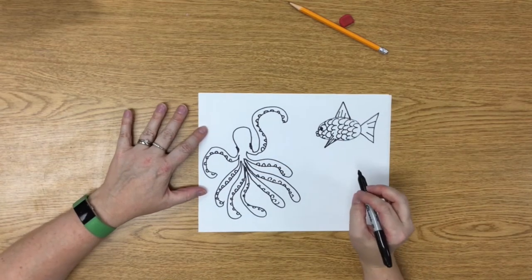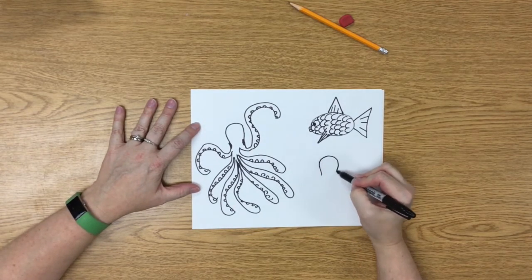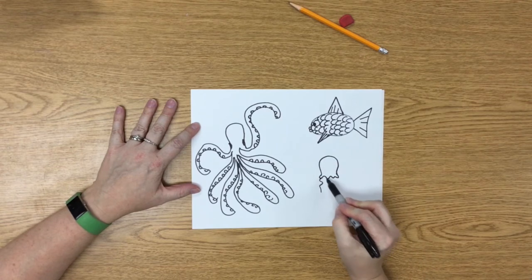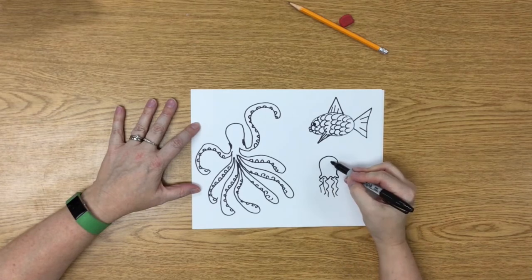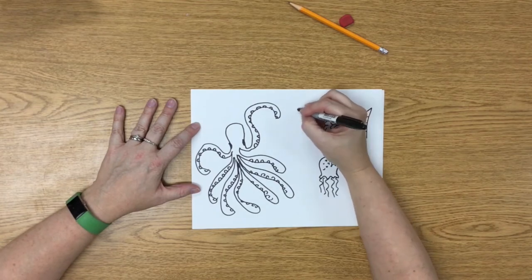And as long as we are thinking of things with tentacles, let's draw a jellyfish. Again, a rainbow, but this time I just add a squiggle to show the bottom of its body. Then those squiggly tentacles, the shiny glare, and eye spots. Ooh, and bubbles. Those are fun.